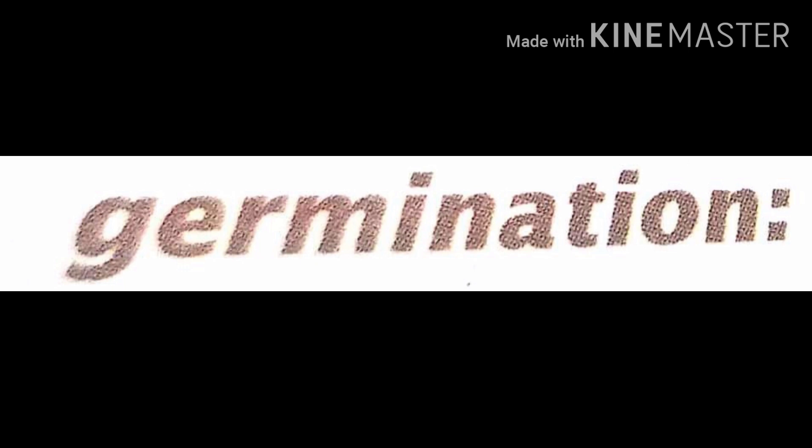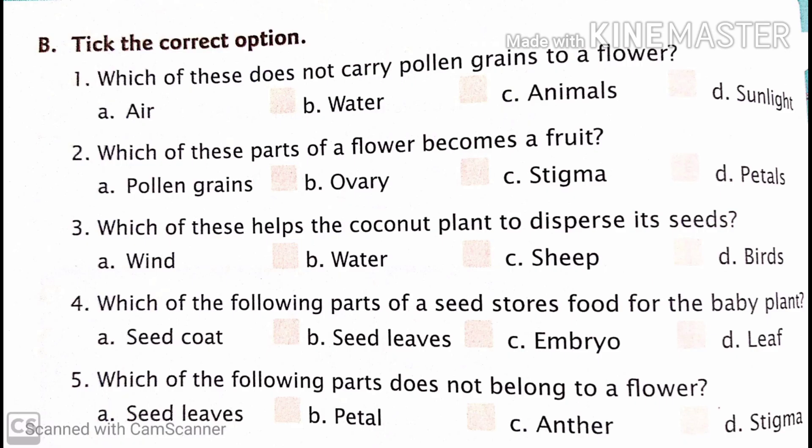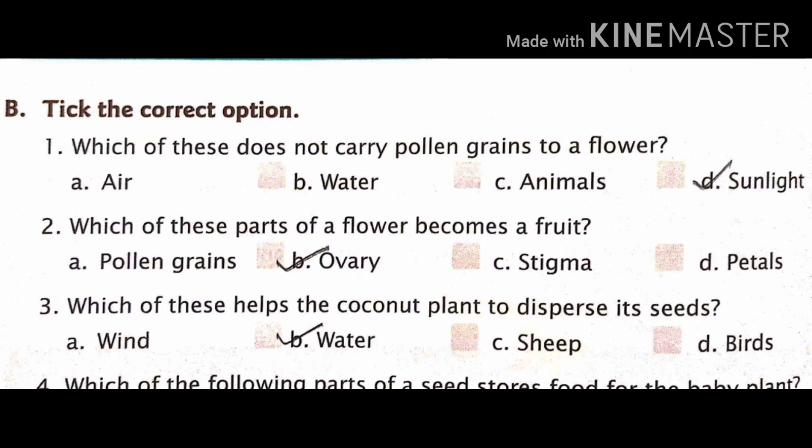With this we finish our fill in the blanks. Part B is pick the correct option. First is which of these does not carry pollen grains to a flower? Options are air, water, animals, and sunlight. And the right answer is yes, sunlight.